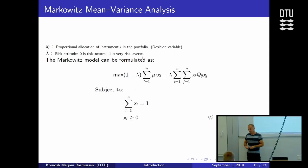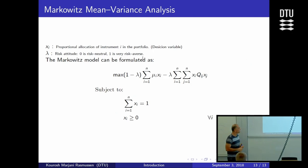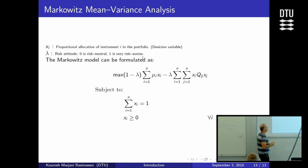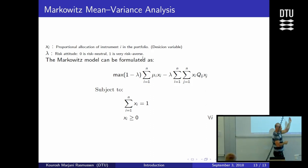So here's the Markowitz model. So that was the model he presented back in 1952, where he essentially saying that we want to maximize that objective function.